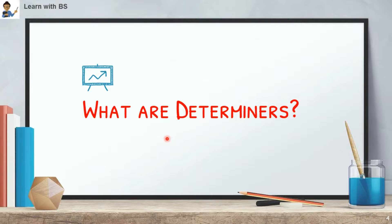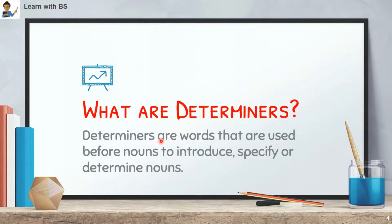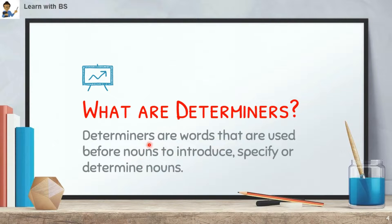So let's start with: what are determiners? Determiners are words that are used before nouns to introduce, specify, or determine nouns. Nouns, you know, are naming words. The words that are used before nouns — their work is to introduce, specify, and determine. This is why they are called determiners. Words which come before nouns.